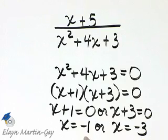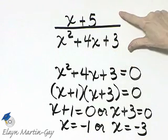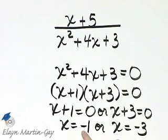So there are two values that make the denominator here zero, which in turn would make this rational expression undefined. Those values are negative one and also negative three.